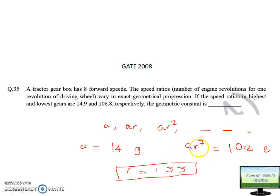A value, that is first speed, is given 14.9. And eighth value, eighth speed, final speed, is given 108.8. Simply divide this by this. So R to the power 7 will equal 108 upon 14.9. When you will solve, you will get R value is 1.33. So R is the geometric constant. It is asking about the geometric constant, so geometric constant value will be 1.33.